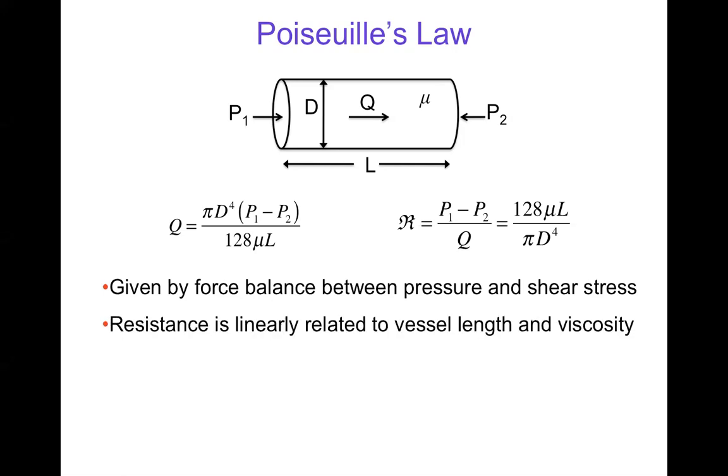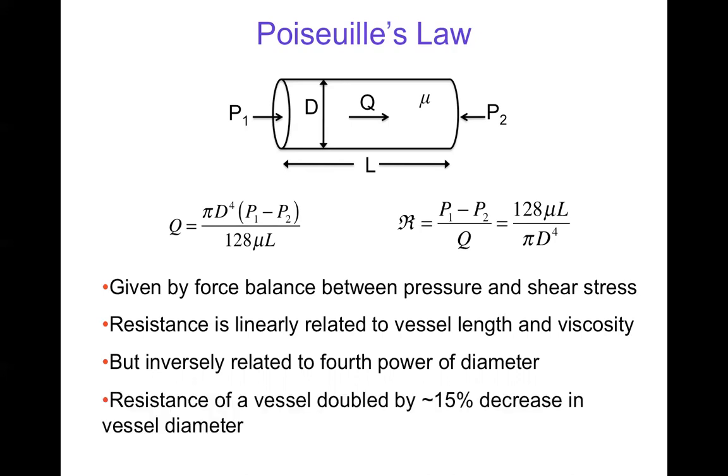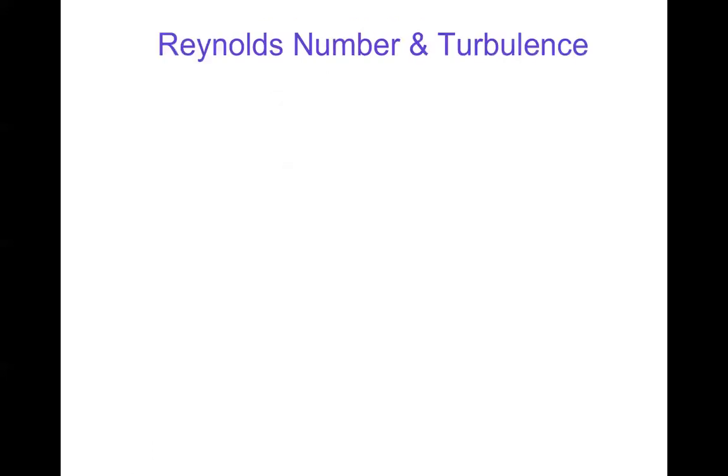Resistance you can see is linearly related to vessel length and viscosity, L and mu, and it's inversely related to the fourth power of diameter, d to the fourth. This means that resistance of a vessel can be doubled by only about a 15% decrease in diameter. So a small decrease in diameter can give a large increase in resistance to flow. That's something that can happen when you get plaques inside your arteries, and that can lead to high blood pressure.